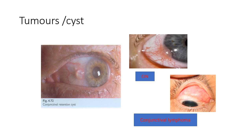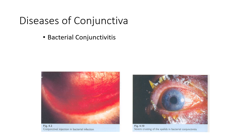Tumors, such as nodules at the limbus, can be asked as a short note. In this picture you can see conjunctival injection in bacterial infection and severe crusting of the eyelids in bacterial conjunctivitis. This can be asked as a long question — describe or discuss bacterial conjunctivitis with clinical features.